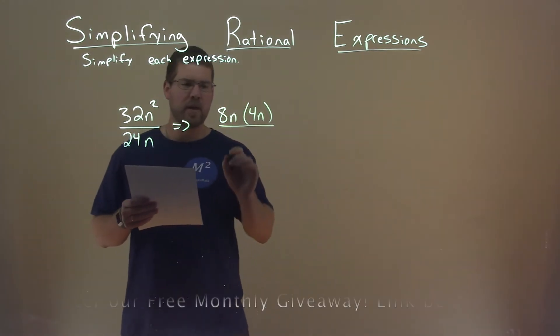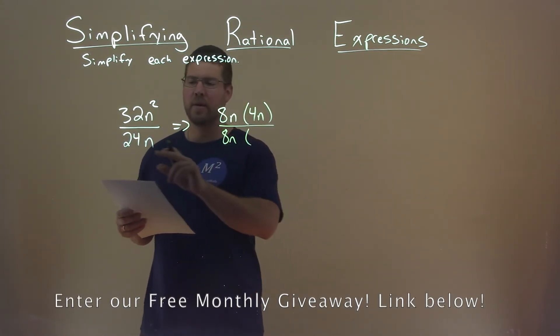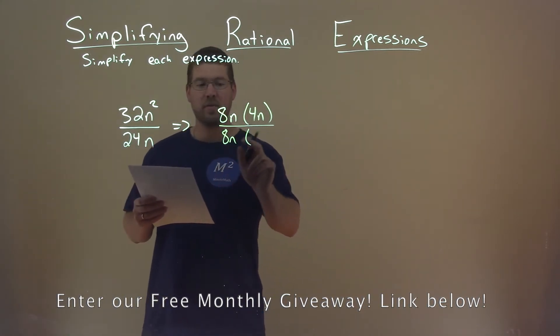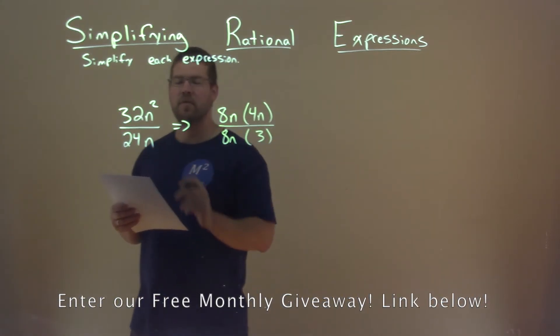Same thing with the denominator. I can pull out an 8n here, and what am I left over with? Well, 8n times 3 is 24n.